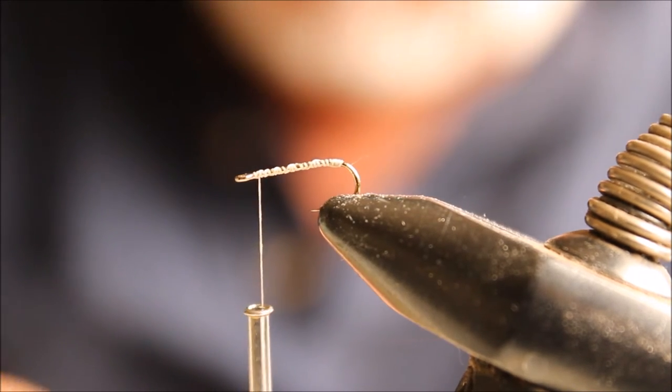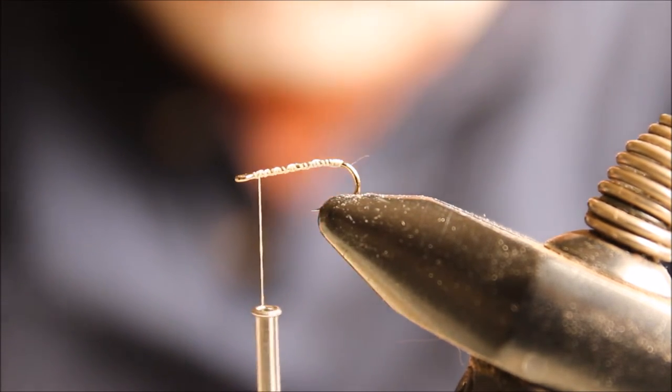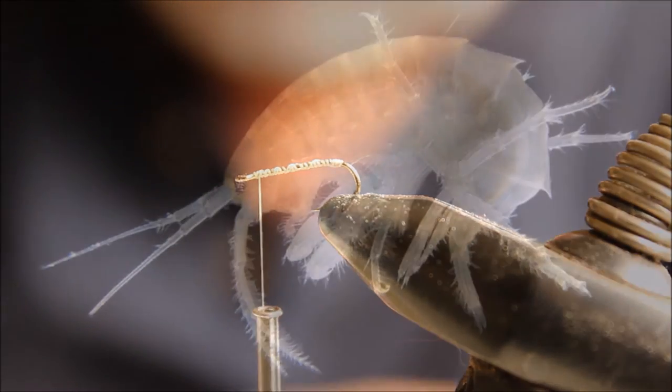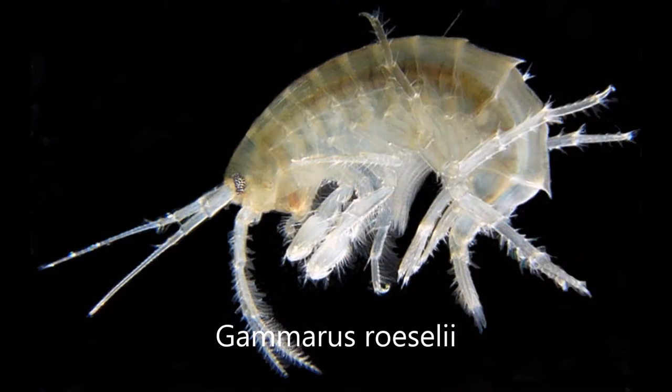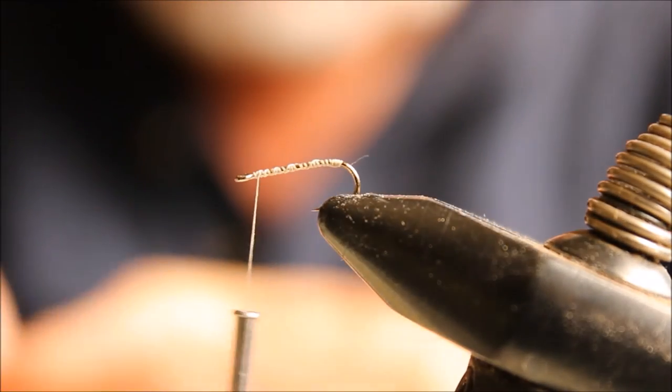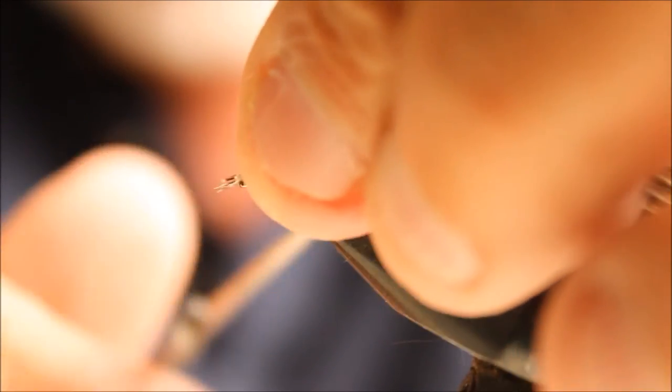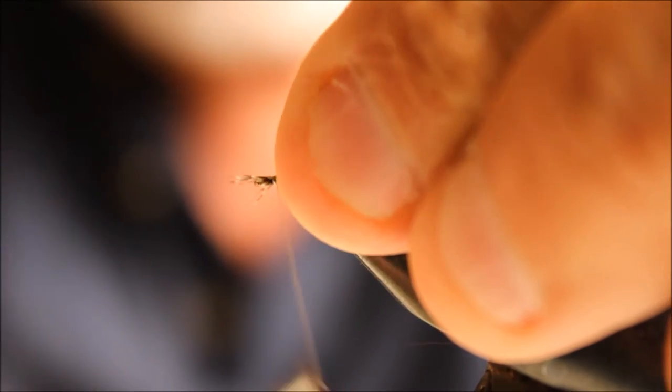I'm going to put up a photo here of what a scud looks like. What I'm using for the tail—a pinch method is going to be—this is a mallard flank.